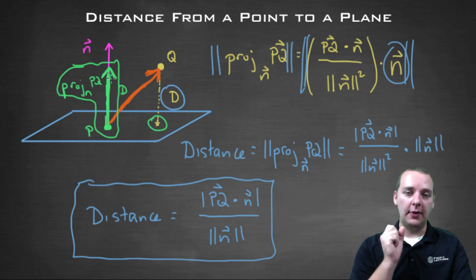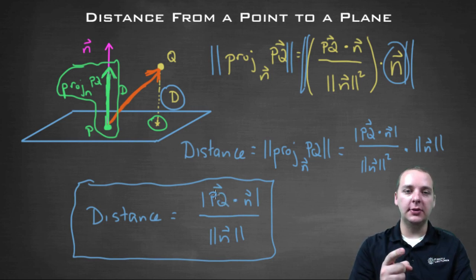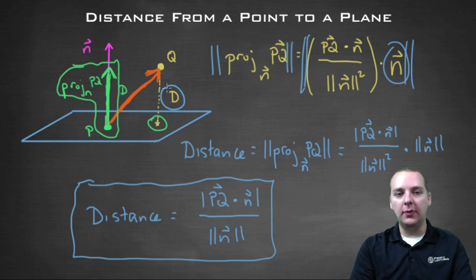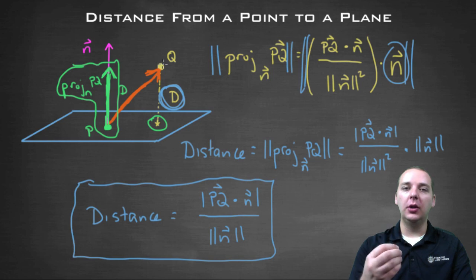Then once you have created your vector PQ, and you've got your vector N, you're going to take their dot product, make sure that your result's positive, because it might be negative, so take the absolute value if it is negative, and divide that by the magnitude of your vector N. And that formula right there will give you the distance, the shortest distance, from your point Q to your plane.